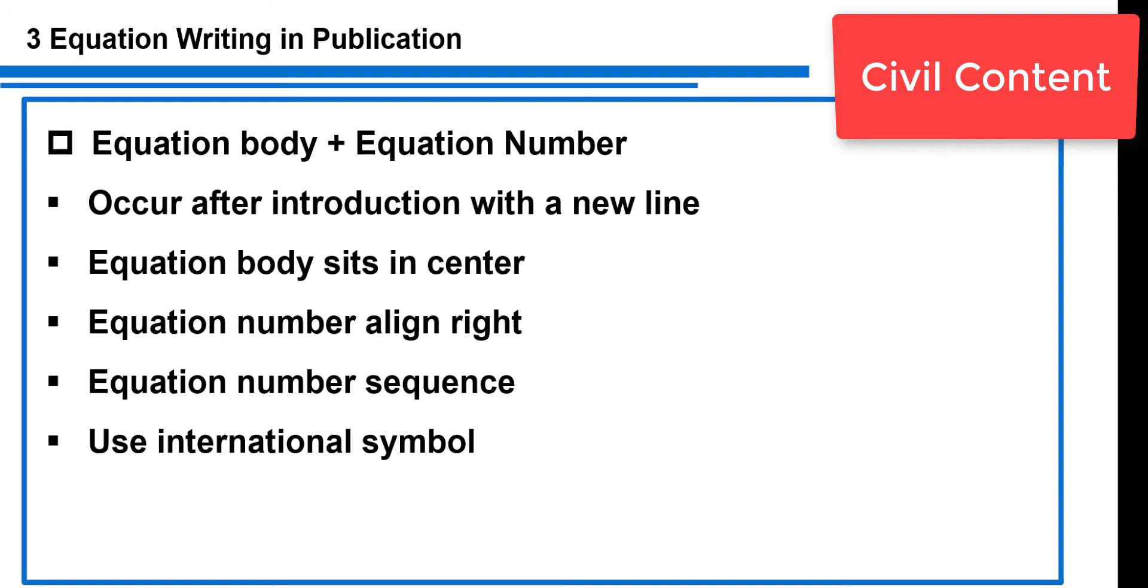If there's no specific requirement, I would suggest you put your equation body in the center. The equation number should align on the right side—that's universal for all publications. The equation number should have a sequence. For manuscript or journal papers, the sequence should start from 1, 2, 3, 4, 5. But if you're writing a thesis with multiple chapters, you should have a new sequence, so your equation number should be chapter number plus equation number. We're going to learn later how to do that in Microsoft Word.